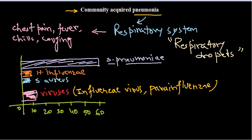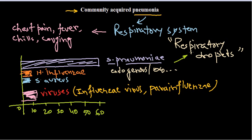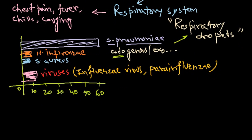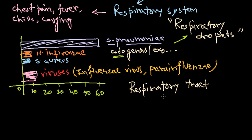For Streptococcus pneumoniae specifically, transmission can be endogenous as well as exogenous. Exogenous means it is carried by respiratory droplets from one person to another; endogenous means it can stay inside a person for a longer period of time. For other bacteria, transmission is mostly via respiratory droplets. After entry, the bacteria move into the respiratory tract.